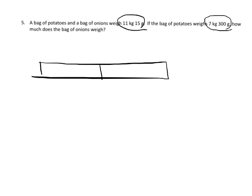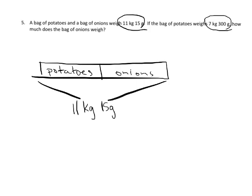So I'm going to draw a tape diagram of this. And our tape diagram is actually going to be a part-part-whole. So we've got the potatoes and the onions. And together, they weigh 11 kilograms, 15 grams. And we know that the bag of potatoes weighs 7 kilograms, 300 grams. And the question is, what does the bag of onions weigh? So what we need to do on this problem is to use subtraction.